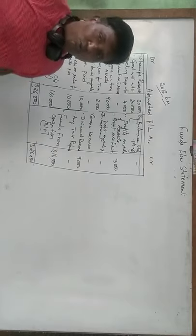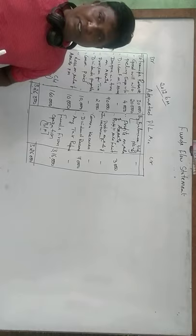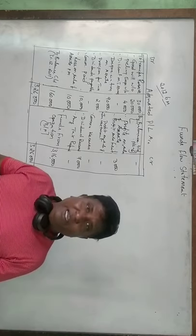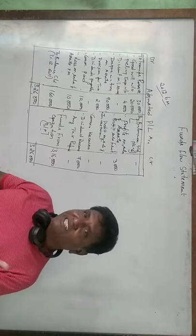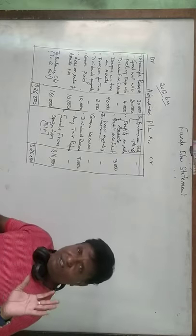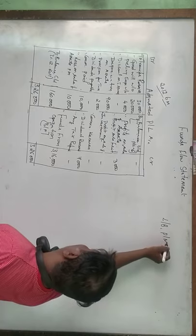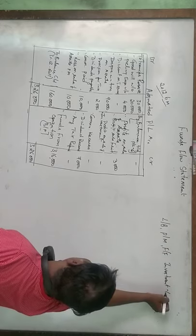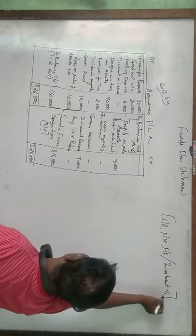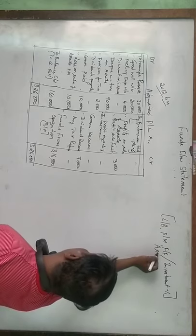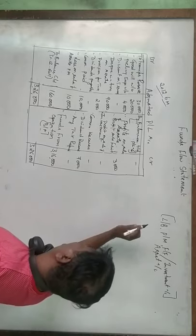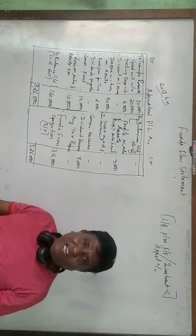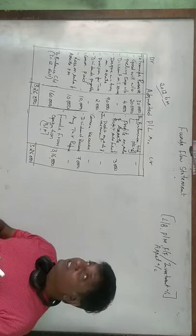Along with this, I want to show you the proforma for two ledger accounts. Sometimes we may need to prepare an asset account — it may be a fixed asset account such as land and building, plant and machinery, furniture, or even an investment account. These are the assets we need to prepare, which is called the asset account. This account is very important from the examination point of view and helps in solving the funds flow statement.